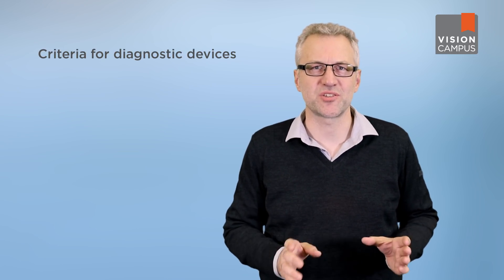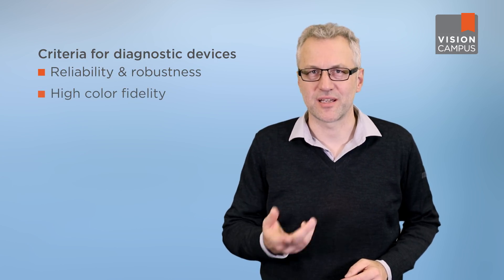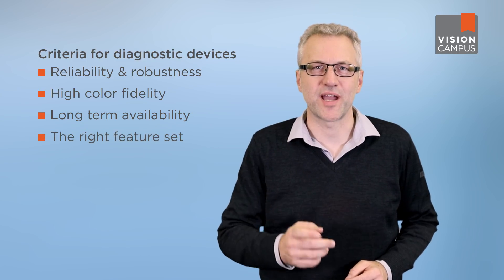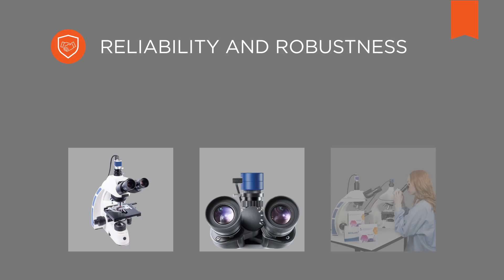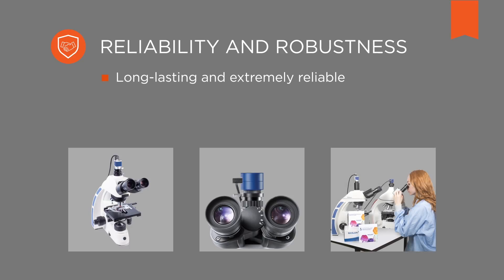Cameras designed for use in medicine and life sciences also face some tough performance and form factor requirements. Because the diagnostic process often depends directly on the camera's image, the criteria that make an industrial camera suitable for diagnostic tasks include reliability and robustness, a high color fidelity, a long-term availability, and the right feature set. The cameras must be manufactured with very high precision to ensure consistent performance. Taking an image of the same region of interest must result in comparable images over time. Unlike consumer cameras, industrial cameras must provide a long service life and be extremely reliable. They also need to be produced under certain industry-adopted ISO standards to fulfill the requirements of medical device manufacturers.